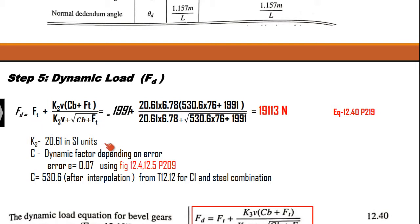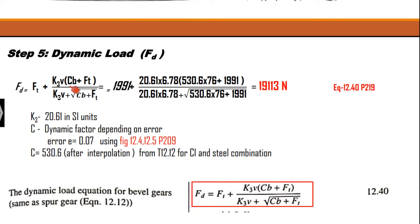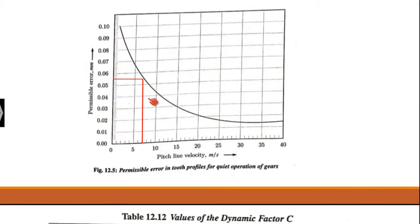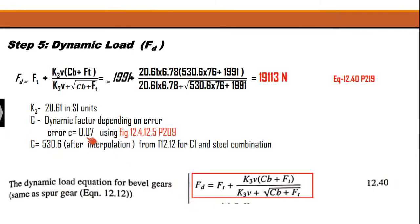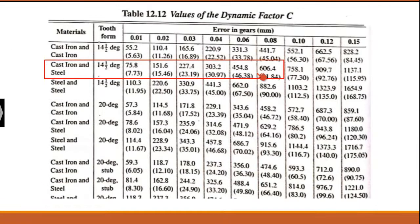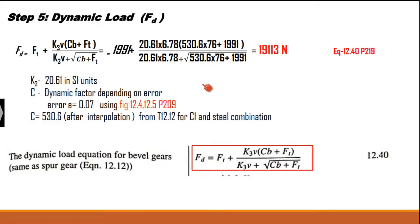The equation for dynamic load is the same as that used for the spur gear. To find the value of C, first calculate the error using the velocity — from the x-axis on the chart, extend to the curve and then to the y-axis. The error value is 0.07. Using this value, calculate C by interpolation from table 12.12. The value of C obtained is 530.6.